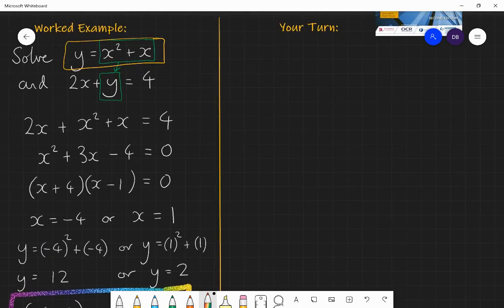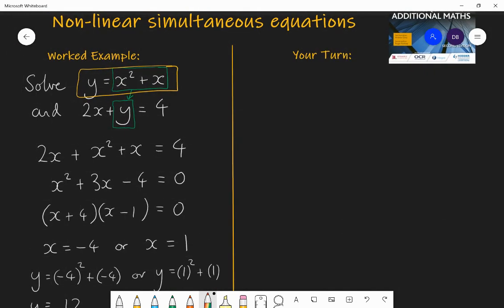So I want you to have a go now. I'm going to give a question. Pause the video at that point and have a go yourself. So solve the two equations y equals x squared minus 6x plus 5 with the equation 2x plus y is equal to 5. So pause at this point. Try and solve these two equations and find the coordinates for which they will both be true.